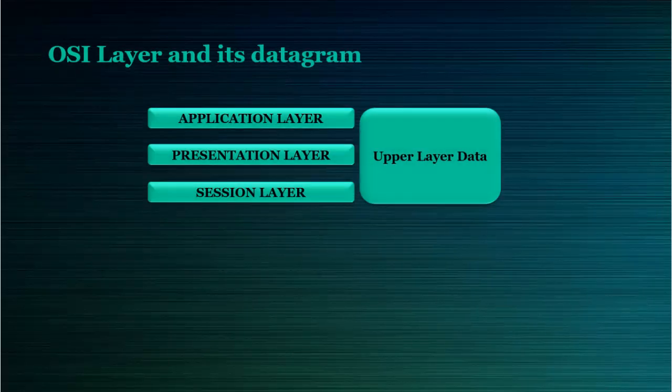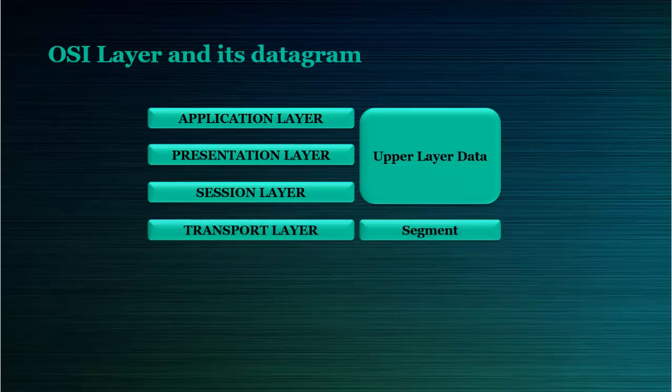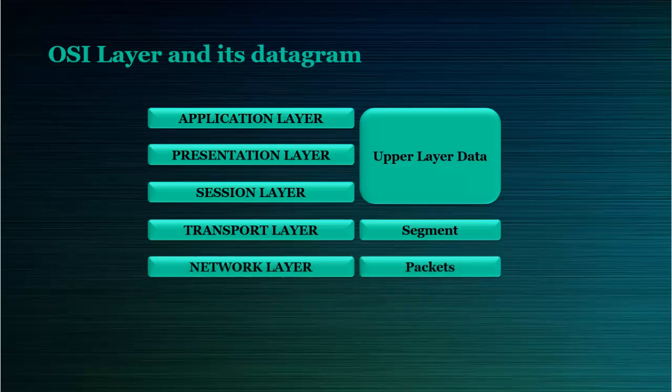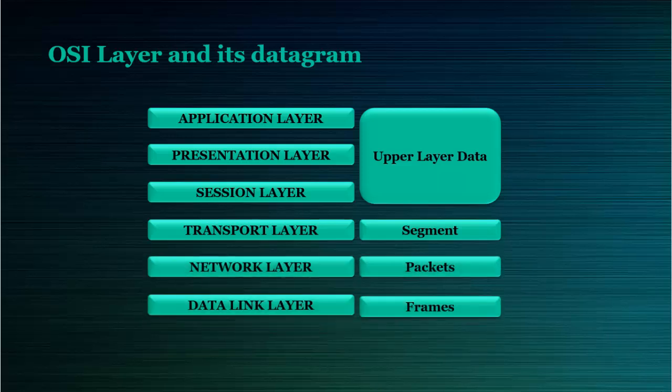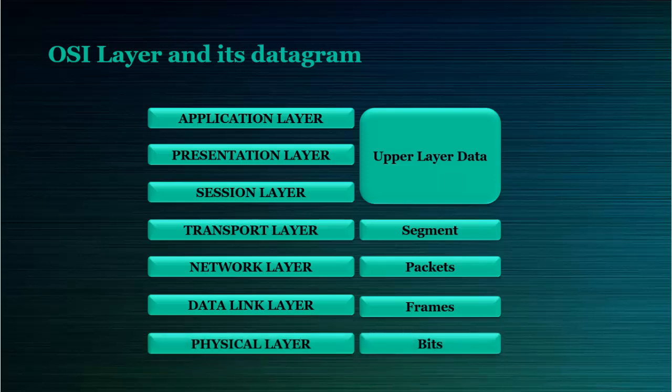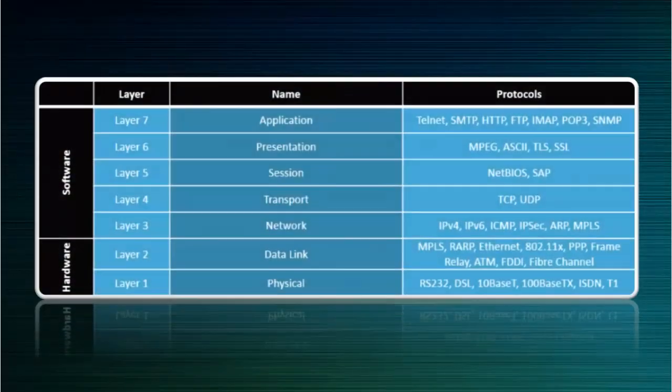To summarize the OSI layer datagrams: the datagram at the upper layer is called upper layer data; at the transport layer, segments; at the network layer, packets; at the data link layer, frames; and at the physical layer, bits. From the table, you can easily see that the first two layers — physical and data link — are meant for hardware, and the top five layers are meant for software. The table also lists the different protocols that work under each layer of the OSI Model.